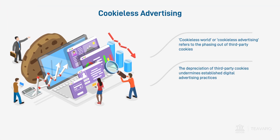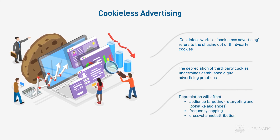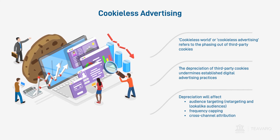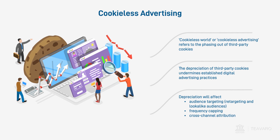The depreciation of third-party cookies undermines the established practices of digital advertising. It will affect audience targeting, retargeting, and look-alike audiences, frequency capping, and cross-channel attribution — by removing the current means advertisers use to connect to their customers.